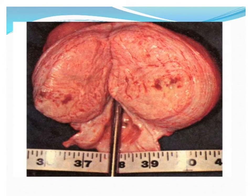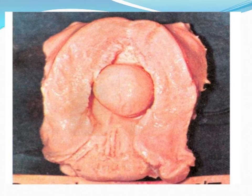Here is the gross picture of the fibroid. A big fibroid has been bisected into two — this is actually the longitudinal section of the uterus, and this area is the cavity of the uterus. In a different patient, the fibroid is located inside the cavity; this is a sessile submucosal fibroid located in the cavity of the uterus.